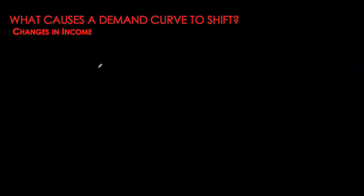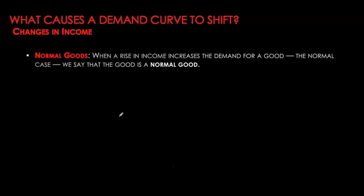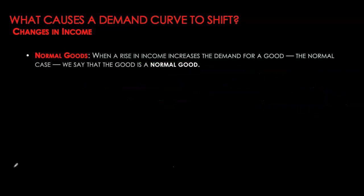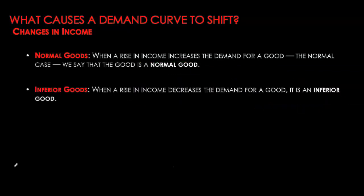Another common factor that causes a shift in the demand curve is income of consumers, and income effects can be split into two types. For normal goods, when your income increases, your demand for the good also increases — if income goes up and people are buying more apples, this causes a shift in the demand curve to the right, or an increase in demand. For normal goods, we have a positive relationship between income and demand. However, this is not always the case.